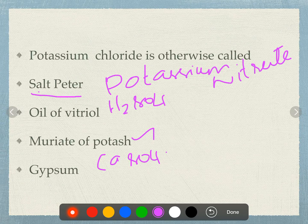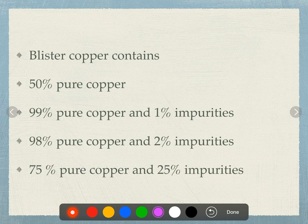Blister copper contains 99% pure copper and 1% impurities. Other options given: 50% pure copper, 98% pure copper with 2% impurities, 75% pure copper with 20% impurities.